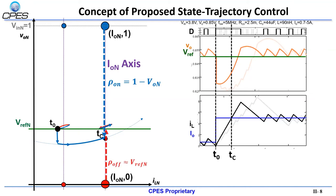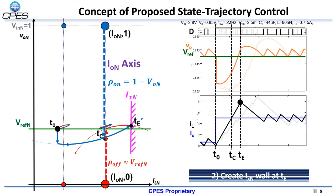Then, the off-trajectory path can be projected where the radius is approximated using v-reference. Knowing the on-and-off trajectory paths to achieve the new steady state, the optimal switching location TE is the intersection of the two circles and can be achieved by creating a current limiting wall. This current limiting wall can be achieved using the capacitor current information.